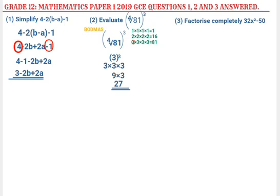What you need to remember is that whenever brackets are used in a question, always refer to BODMAS. So 27 was the correct answer for question 2.